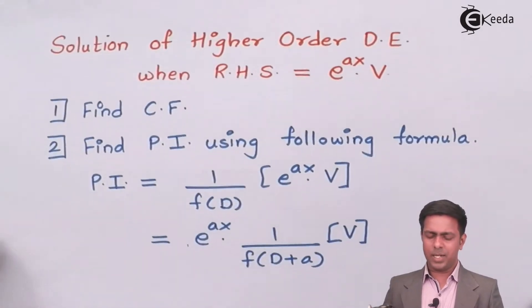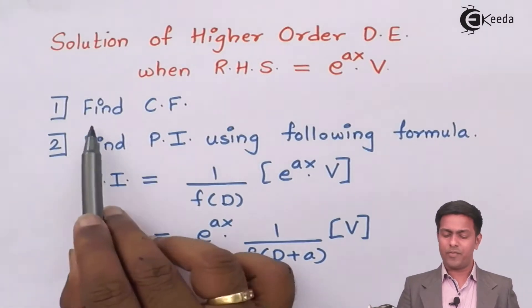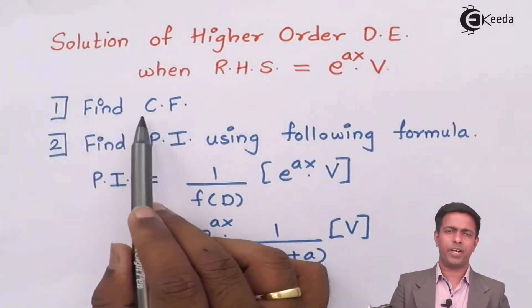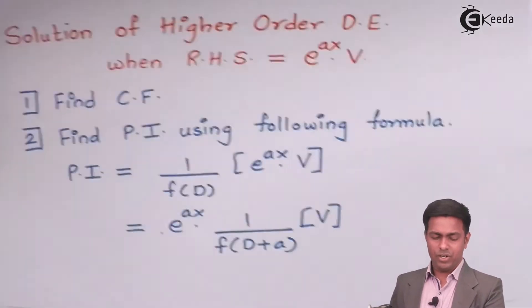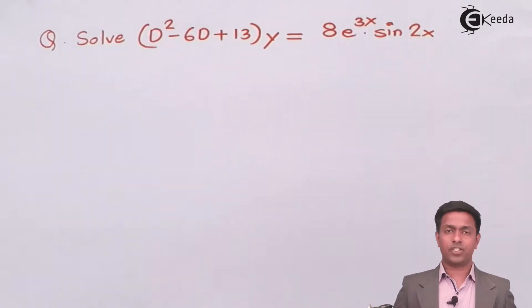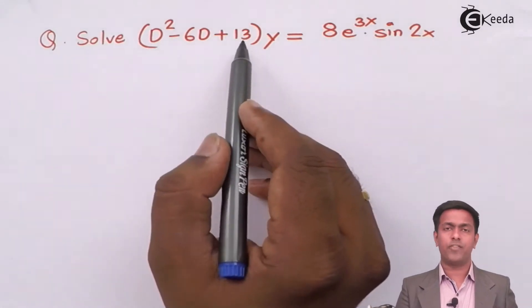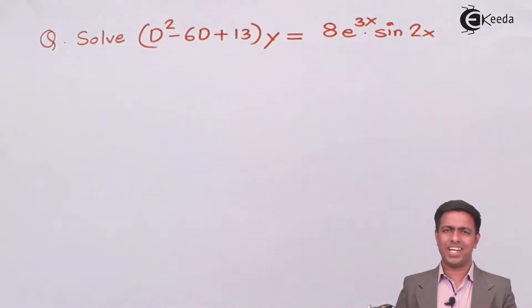According to step number 1 we have to first find out the complementary function and then we will find out the particular integral. To get the complementary function here we have f of D will equate it to 0, we will find the auxiliary equation and we will find out the complementary function.